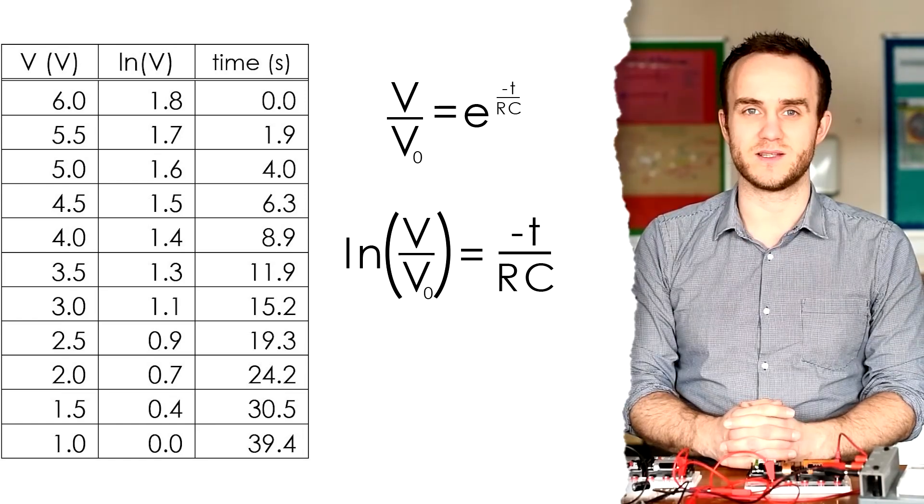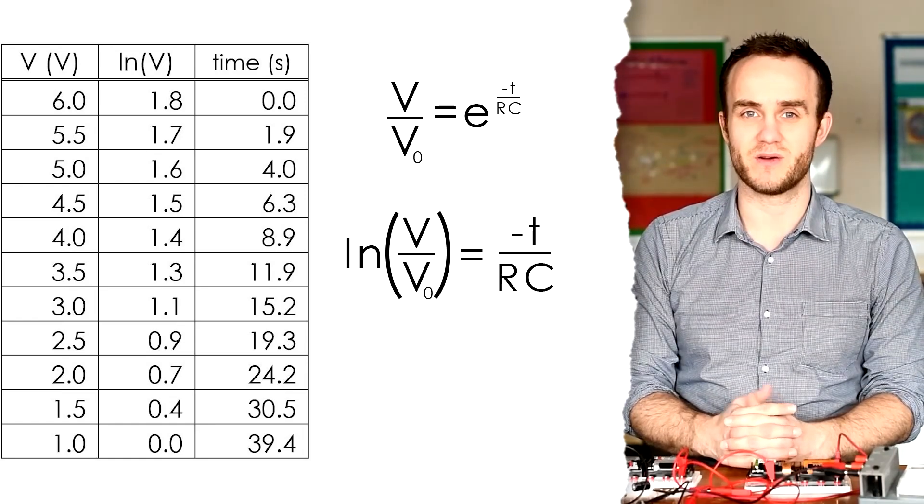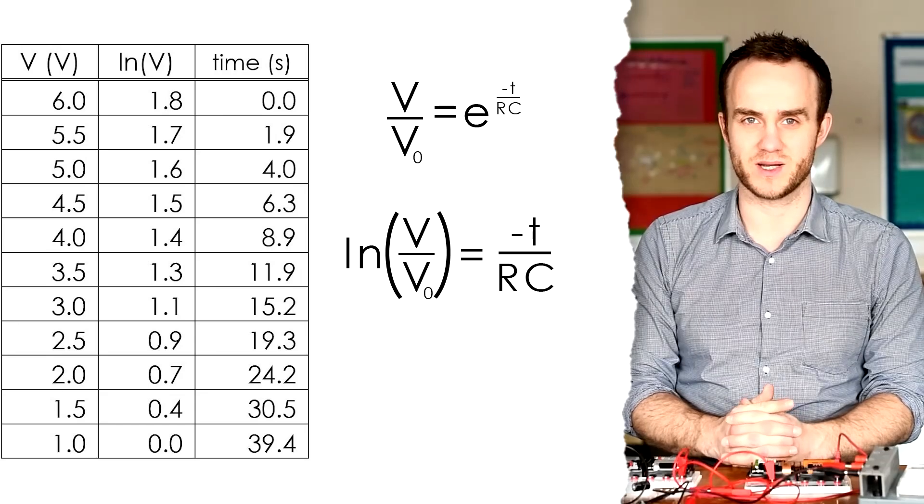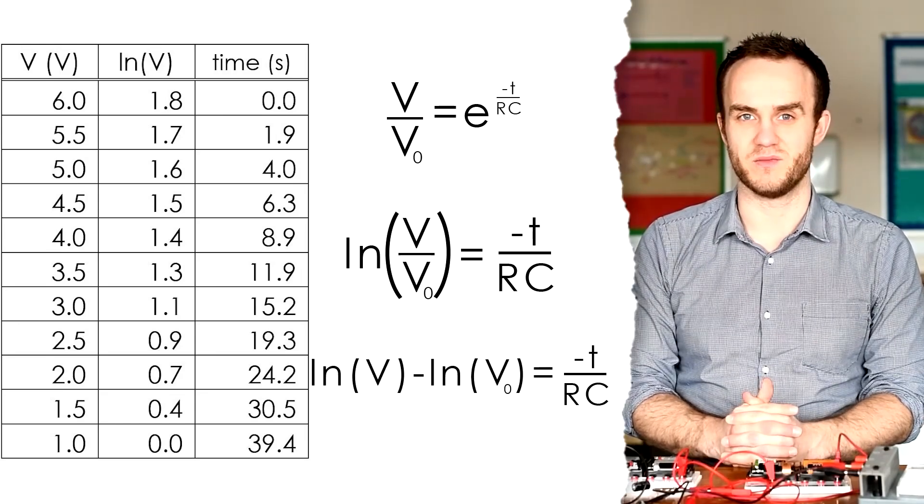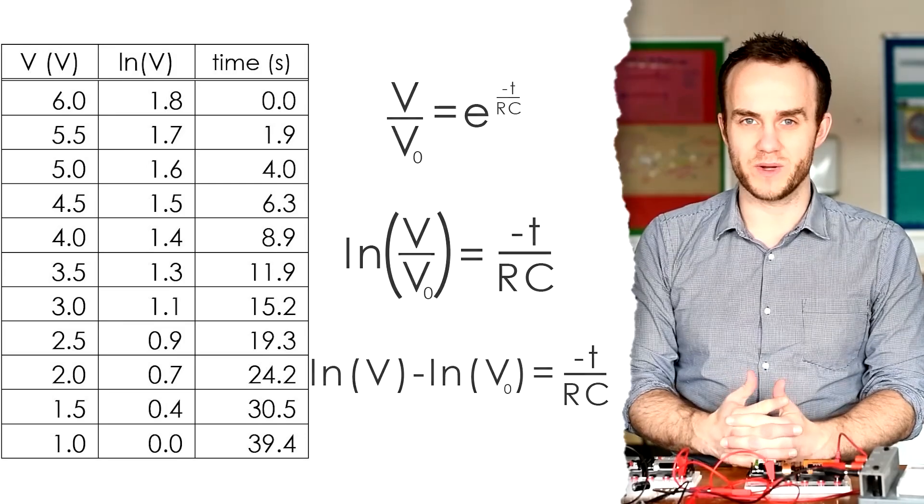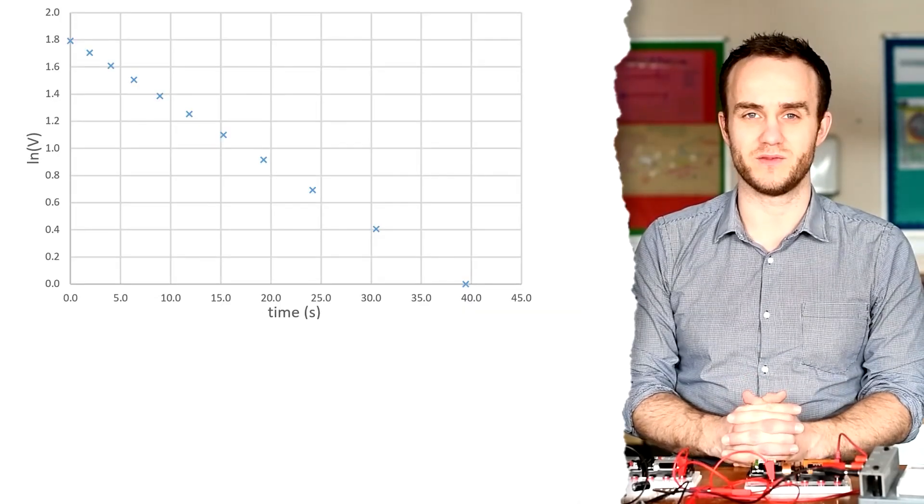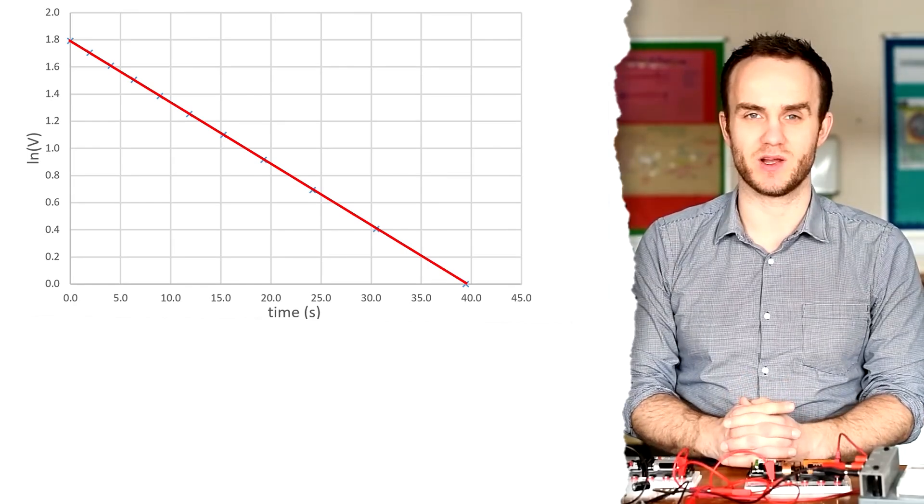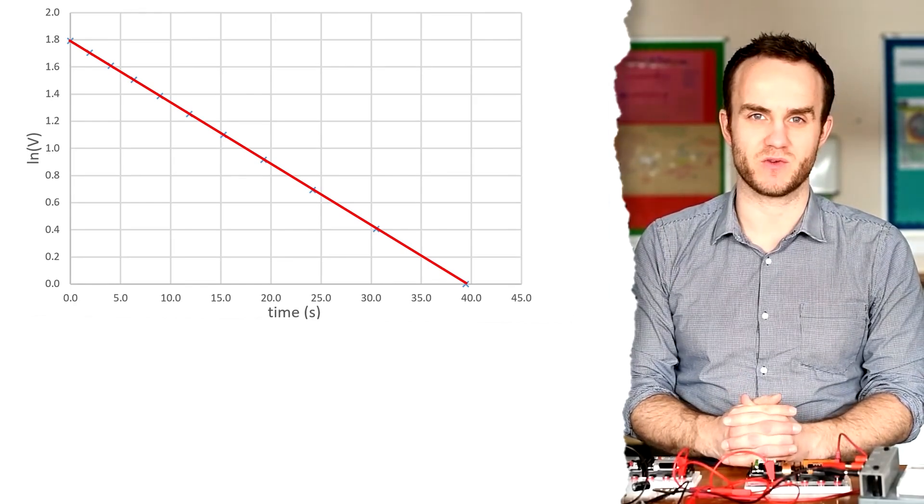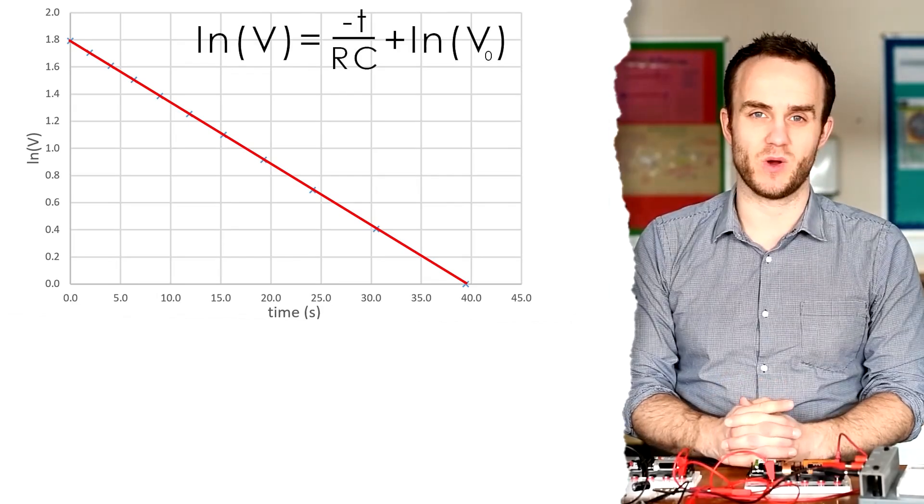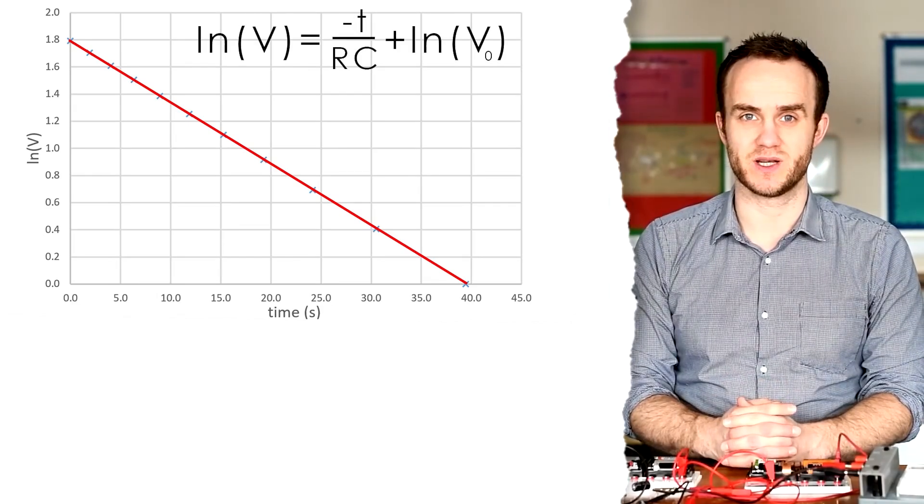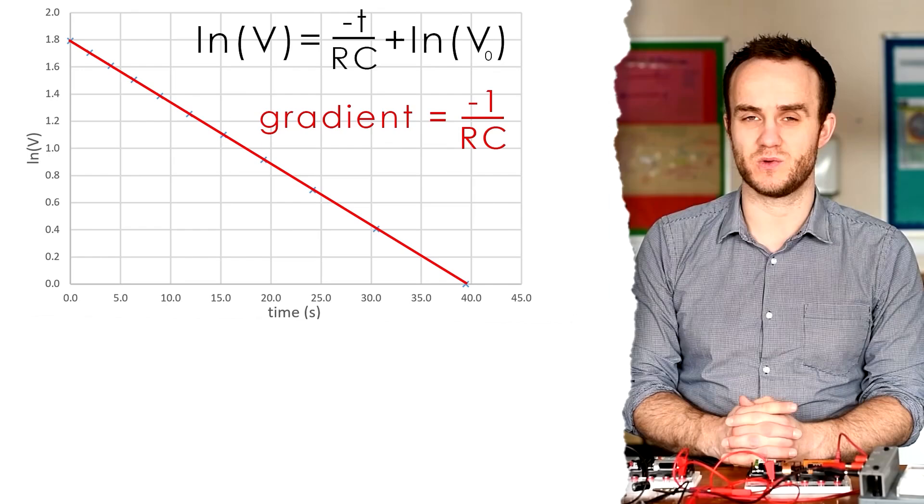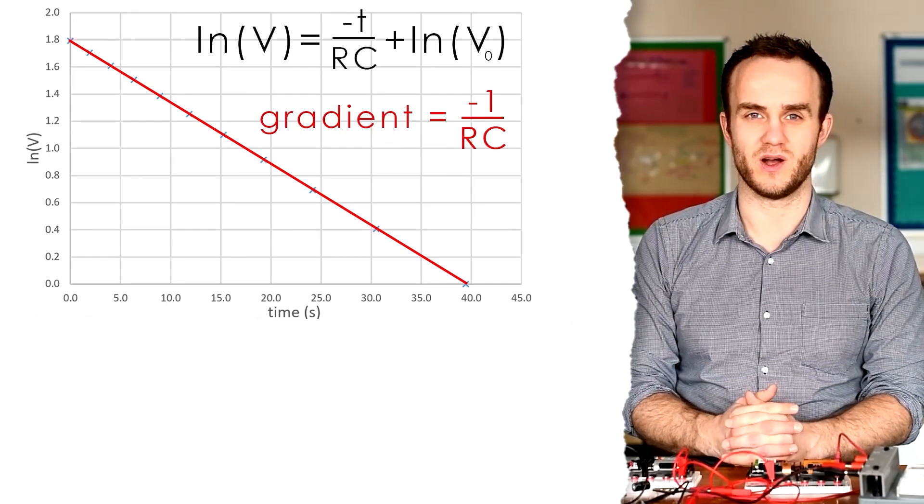Now our log identities tell us that log V over V0 is equal to log V minus log V0, and that's equal to minus T over RC. So what we can do is just plot a graph of log V against time, and that gives us a straight line graph with a negative gradient. Where it hits the y-axis, that's log V0. So that means our gradient is equal to minus 1 over RC.